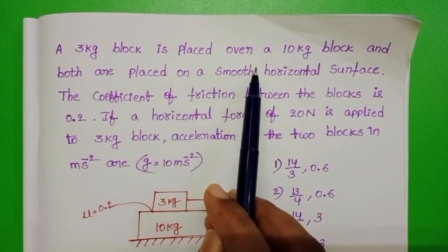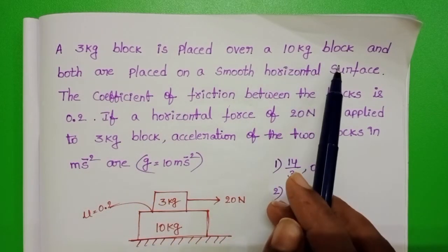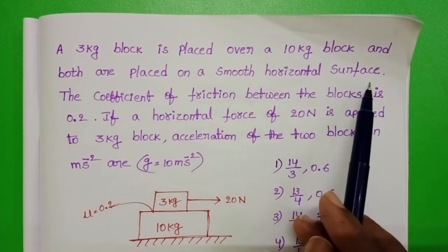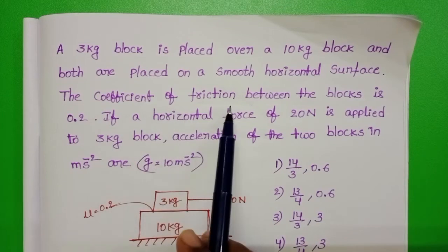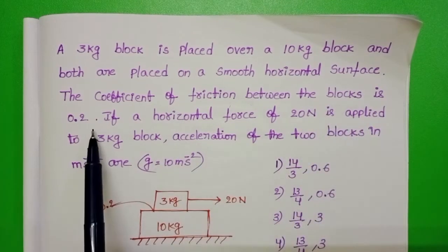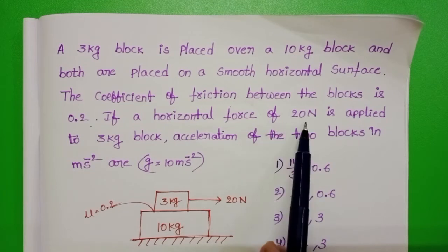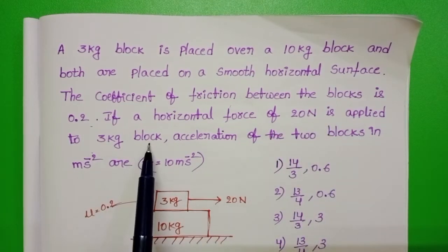A 3 kg block is placed over a 10 kg block and both are placed on a smooth horizontal surface. The coefficient of friction between the blocks is 0.2. If a horizontal force of 20 N is applied to 3 kg block,